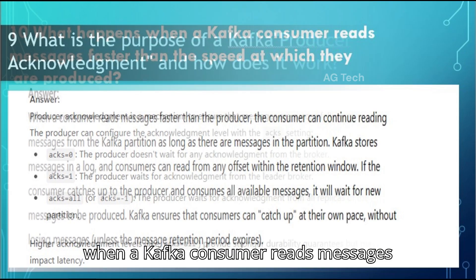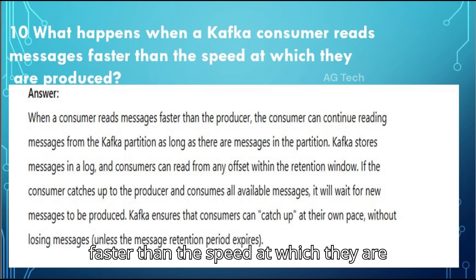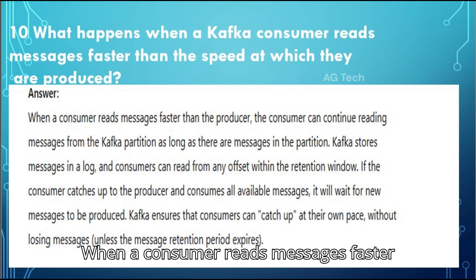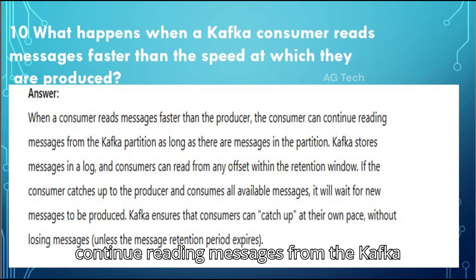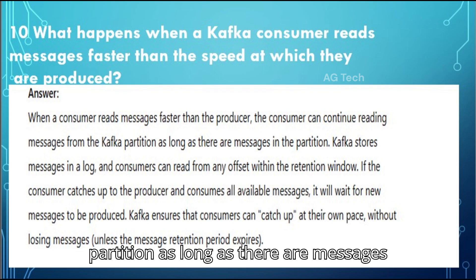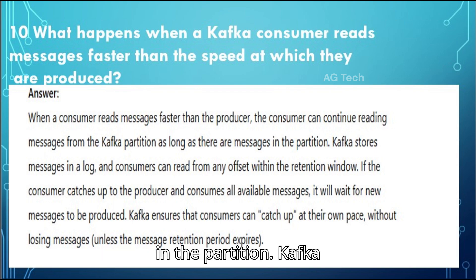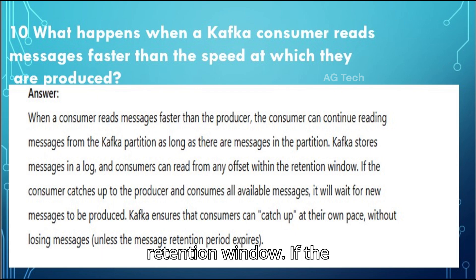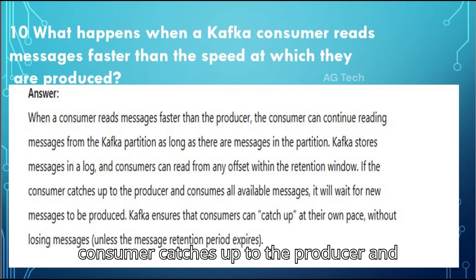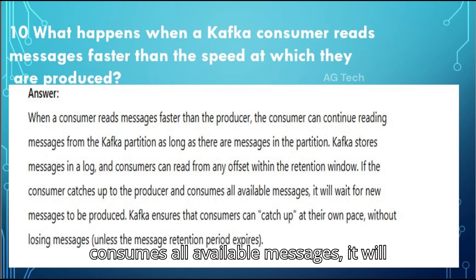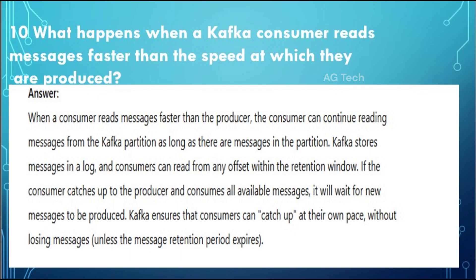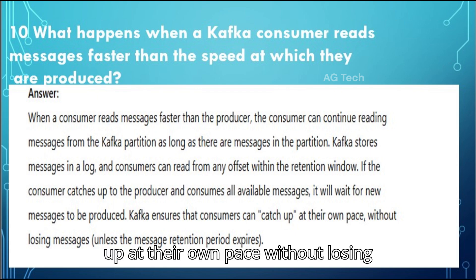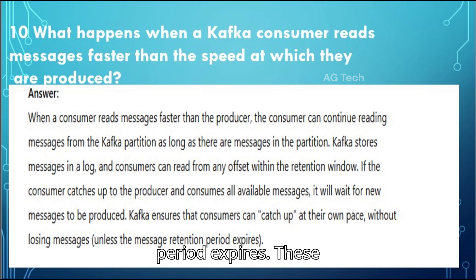Question 10: What happens when a Kafka consumer reads messages faster than the speed at which they are produced? Answer: When a consumer reads messages faster than the producer, the consumer can continue reading messages from the Kafka partition as long as there are messages available. Kafka stores messages in a log, and consumers can read from any offset within the retention window. If the consumer catches up to the producer and consumes all available messages, it will wait for new messages to be produced. Kafka ensures that consumers can catch up at their own pace without losing messages, unless the message retention period expires.